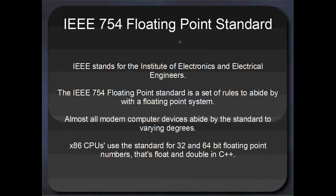The actual standard that we use in modern computers is from the IEEE, which is the Institute of Electronics and Electrical Engineers, and it's called the 754 floating point standard. There was a few versions of these, one in maybe 83 or 87, another version came out in the 90s, and one in maybe 2003, but they're all basically the same standard, just updates. It's basically a set of rules to abide by with a floating point system.